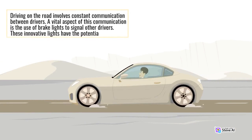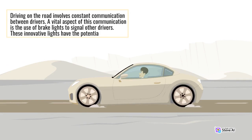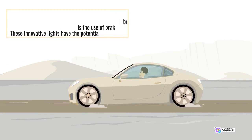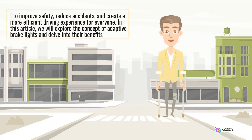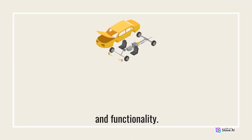Driving on the road involves constant communication between drivers. A vital aspect of this communication is the use of brake lights to signal other drivers. These innovative lights have the potential to improve safety, reduce accidents, and create a more efficient driving experience for everyone. In this article, we will explore the concept of adaptive brake lights and delve into their benefits and functionality.